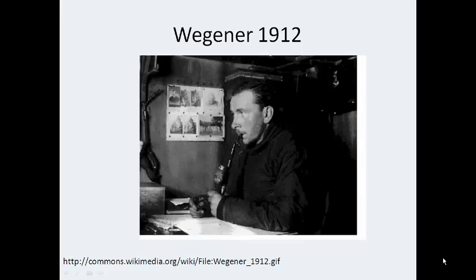So what is the evidence for continental drift? Around the early 1900s, a German meteorologist named Wegener came up with the idea of continental drift because he came across some information that made him wonder about factors surrounding the continents.